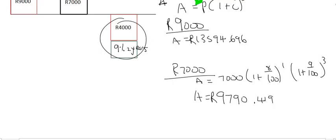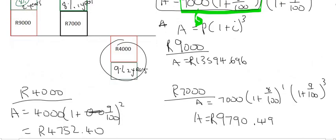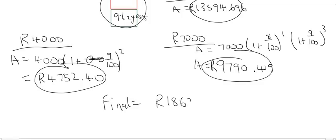Then we have the 4,000 rand withdrawal: 4000 × (1 + 0.09)² — nine percent for two years — and that gives an answer of R4,752.40. To work out the total amount Greg has, you add the two deposited amounts and subtract the withdrawal amount of R4,752.40. Putting all of that into the calculator gives a final answer of R18,632.72.